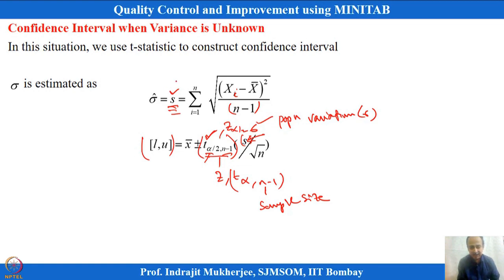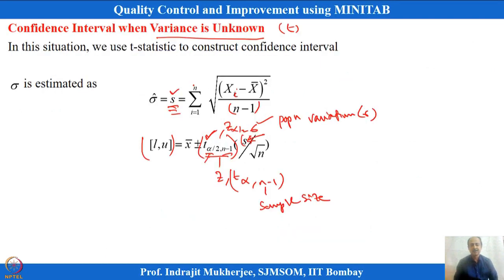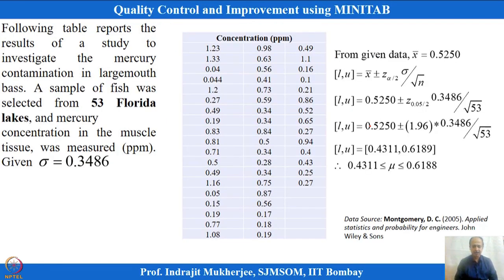Two important things to remember: confidence interval and level of significance. If alpha is 5%, then 5% of the time the confidence interval can be wrong. If variance is known, use Z to define bounds; if population variance is unknown, use the T-statistic. T values can be obtained from statistical tables at the end of any statistics book, but MINITAB will do it automatically. Define the samples and MINITAB calculates it.